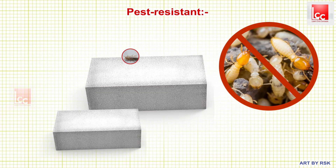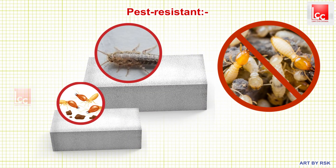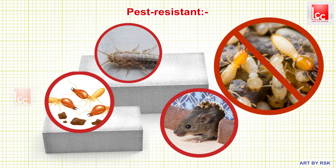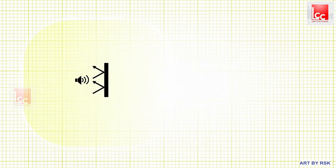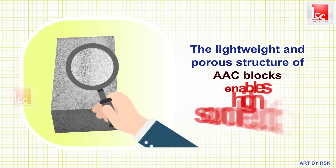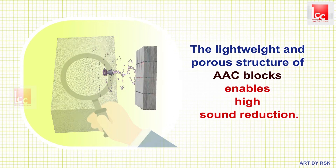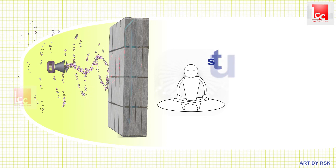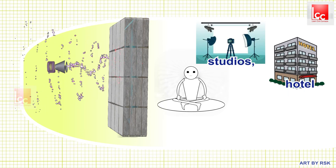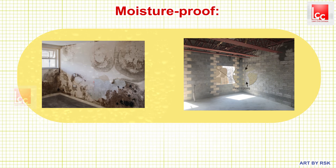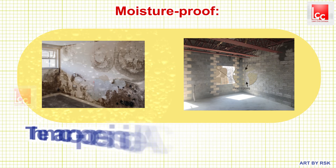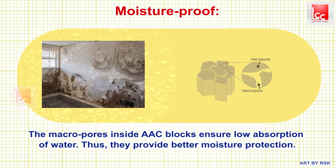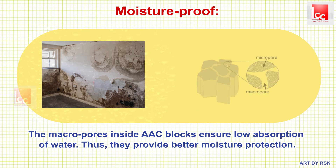Pest resistant: AAC blocks are prepared from inorganic materials, which help in protecting the structure from pests such as termites and rodents. Soundproof: the lightweight and porous structure of AAC blocks enables high sound reduction; for this reason, AAC block material is widely used in the construction of studios, hotels, and hospitals. Moisture proof: the micro pores inside AAC blocks ensure low absorption of water, thus providing better moisture protection.